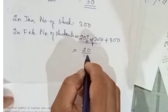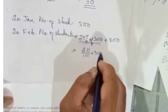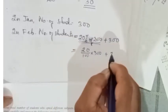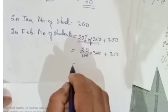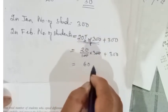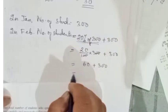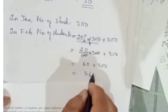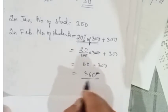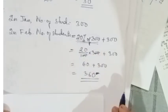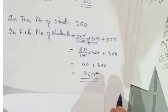20 by 100 into 300 gives us 60. Then 60 plus 300 equals 360. So 360 students are in February.